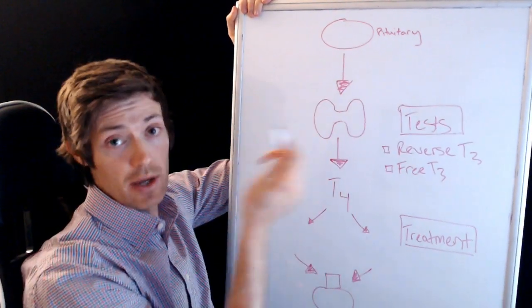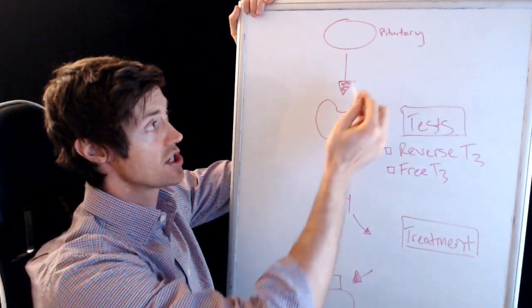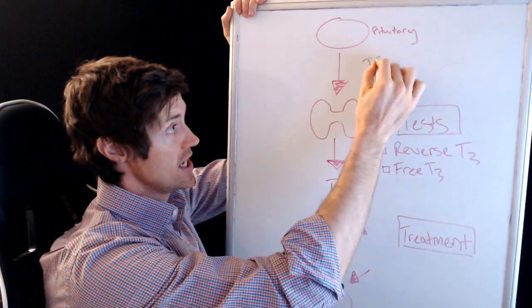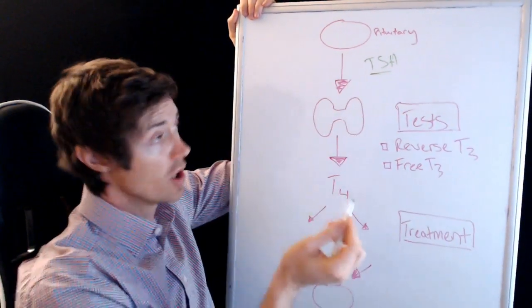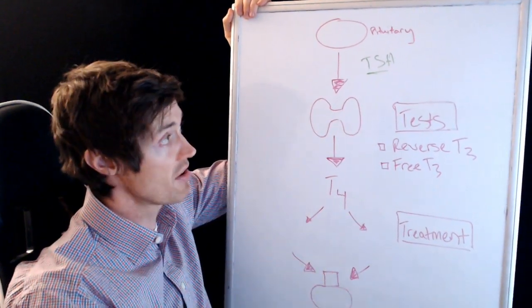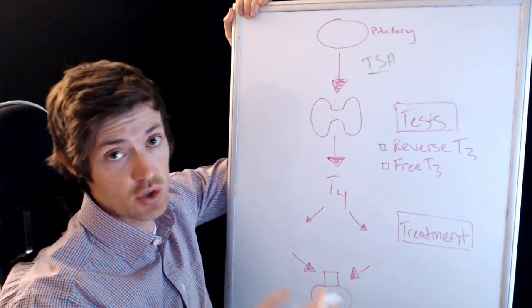The tests that you want to order to see if it's happening in you, and then some of the treatment that you want to do. So let's first start by just looking at this generic physiology of thyroid function, because you really need to understand this to understand how levothyroxine can contribute. So we have up here the pituitary gland, which is in your brain. The pituitary secretes a hormone called TSH. Now, you guys all know about this, right? You know what TSH is, because if you have a thyroid condition, I guarantee that you've had this test before.